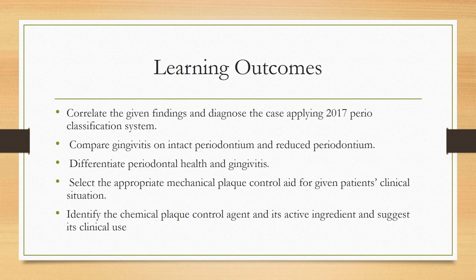The learning outcomes are: correlate the given findings and diagnose the case applying the 2017 periodontal classification system; compare gingivitis on intact periodontium and reduced periodontium; differentiate periodontal health and gingivitis; select the appropriate mechanical plaque control aid for a given patient's clinical situation; and identify the chemical plaque control agent and its active ingredients and clinical use.